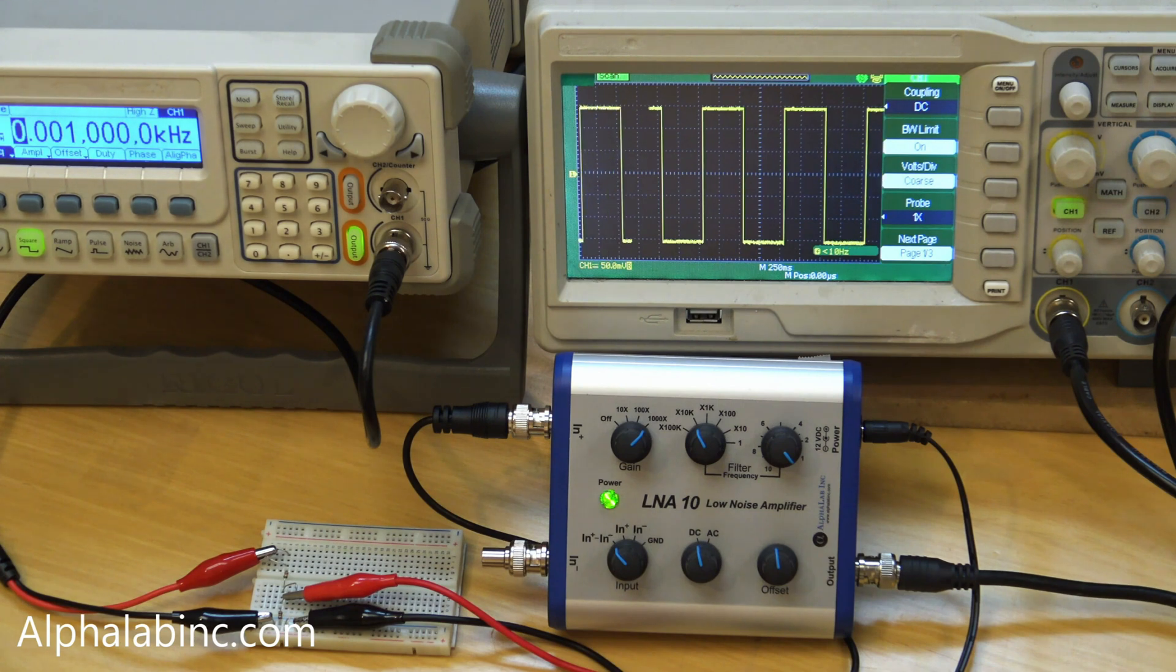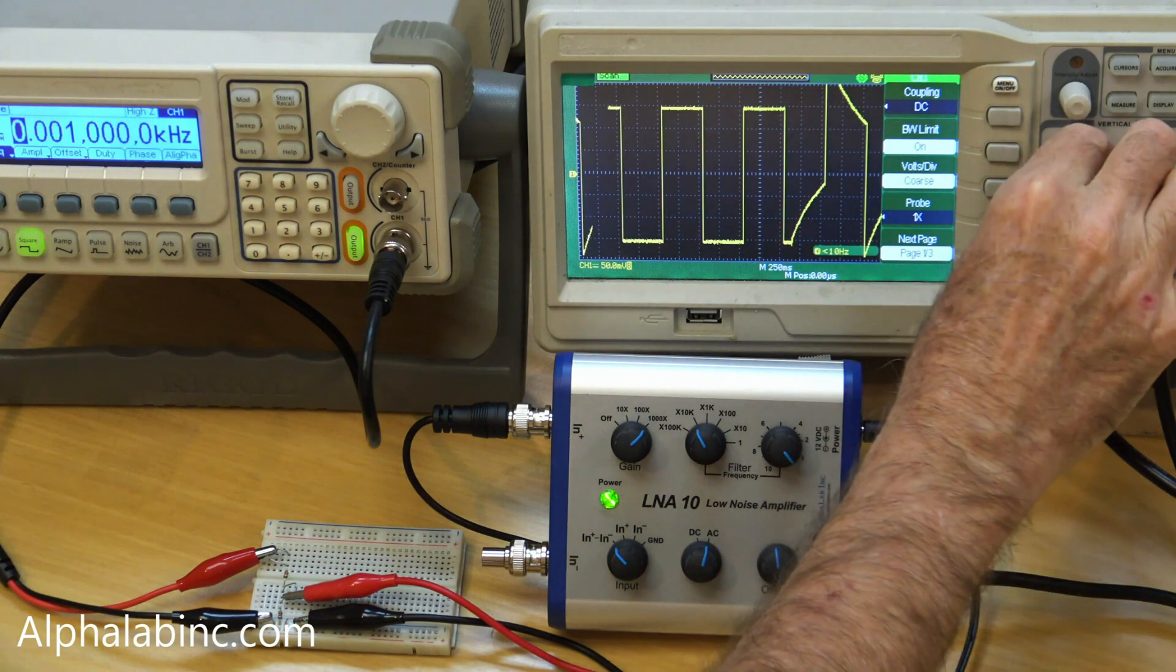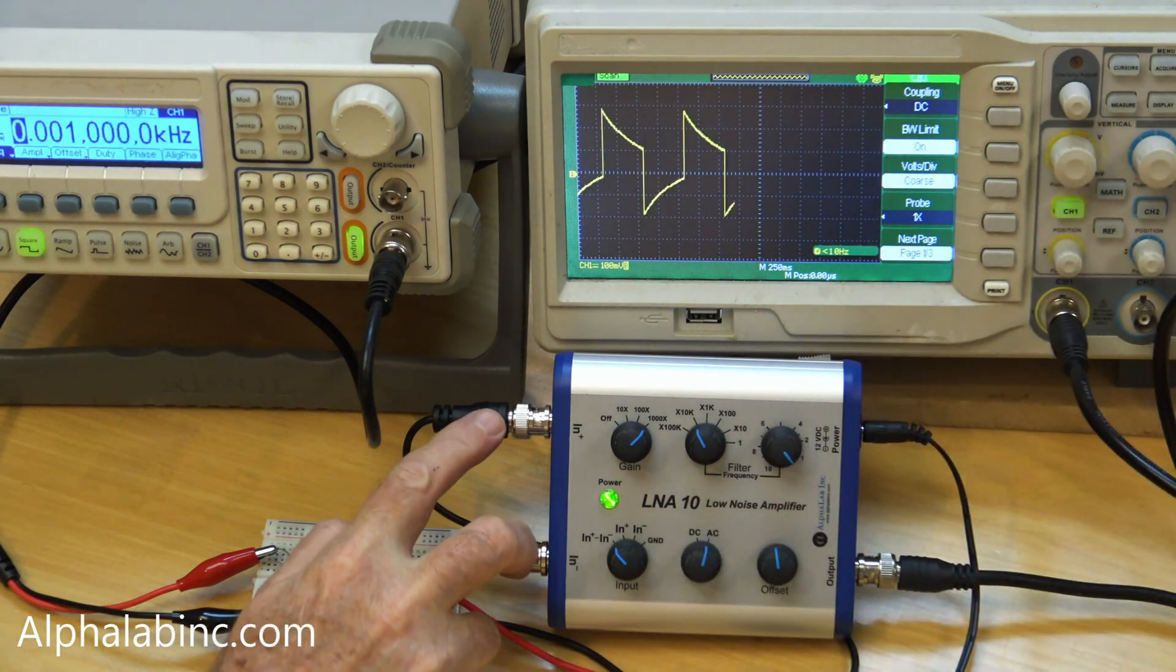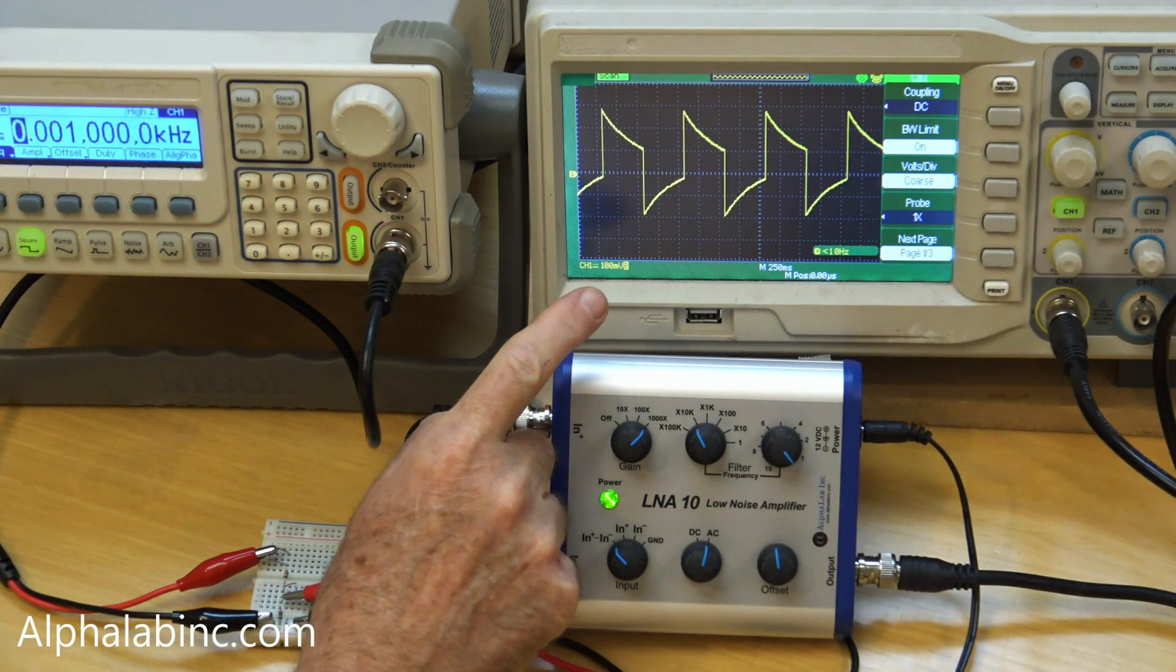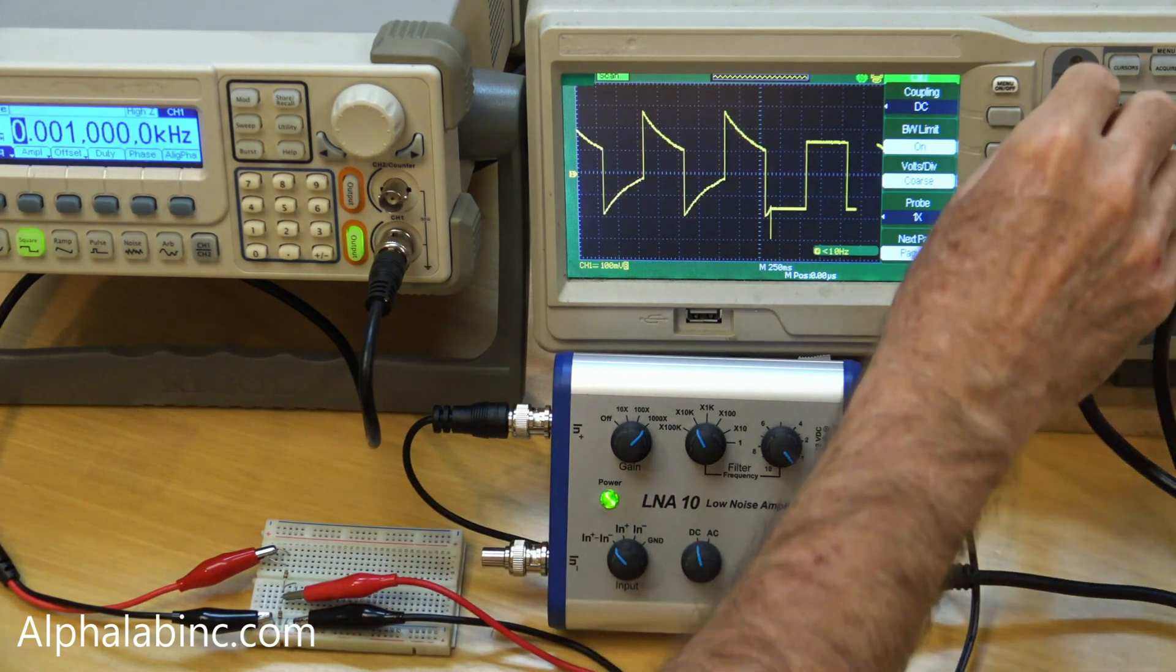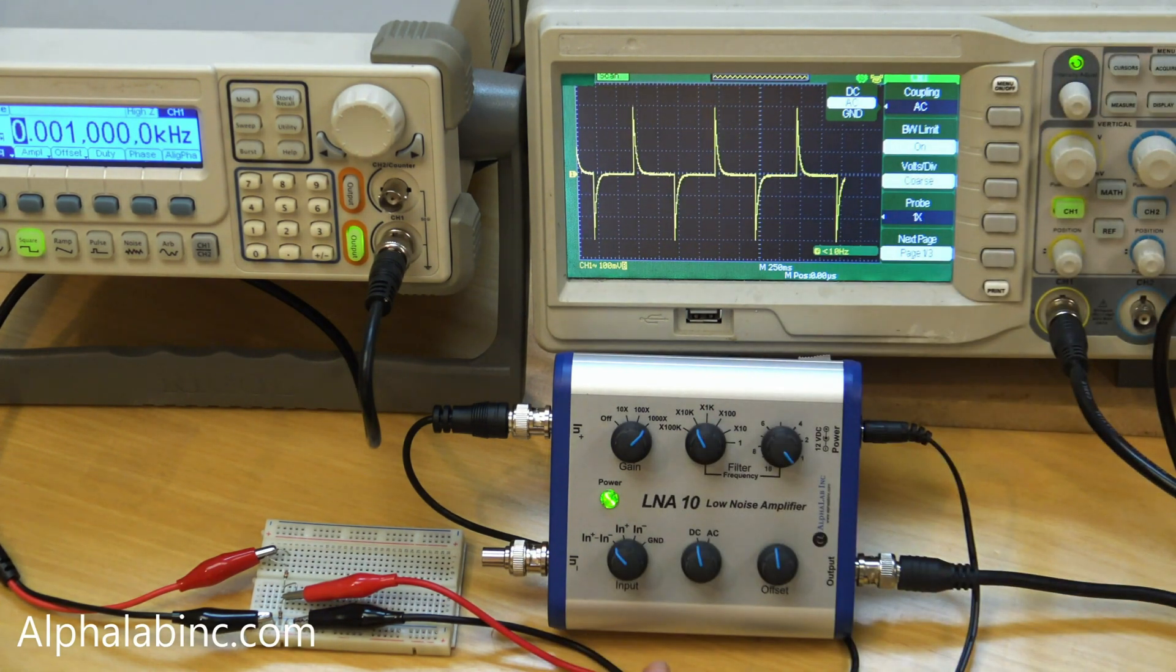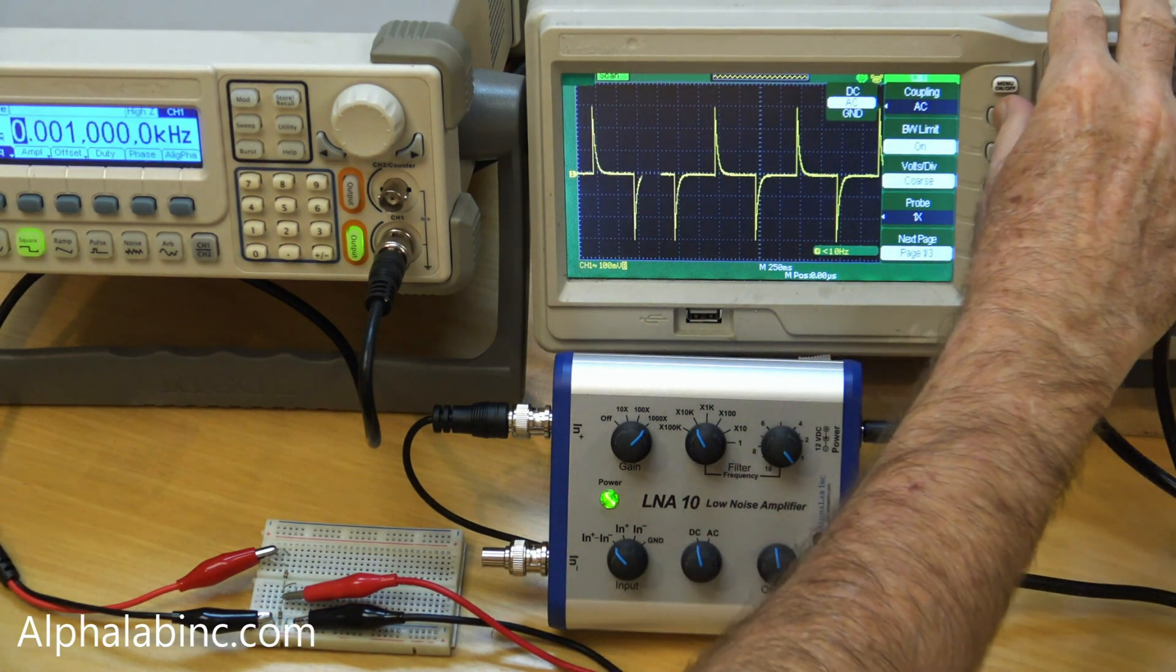There's also AC coupling, where both the negative and positive inputs are AC coupled. The time constant is approximately one second. Compare this to AC coupling of a scope, which has a time constant, typically, of a tenth of a second.